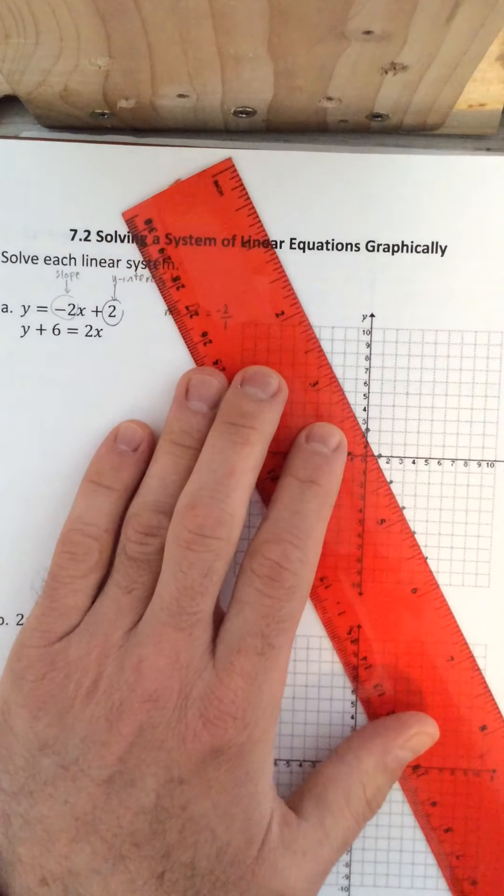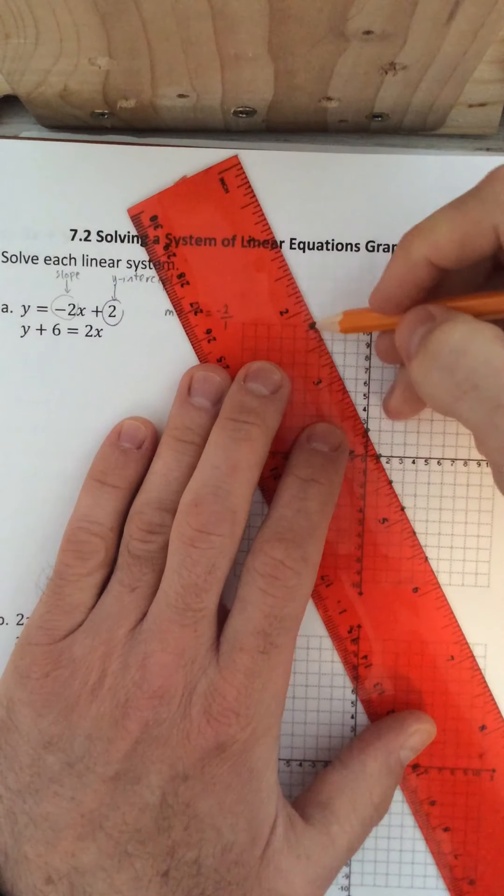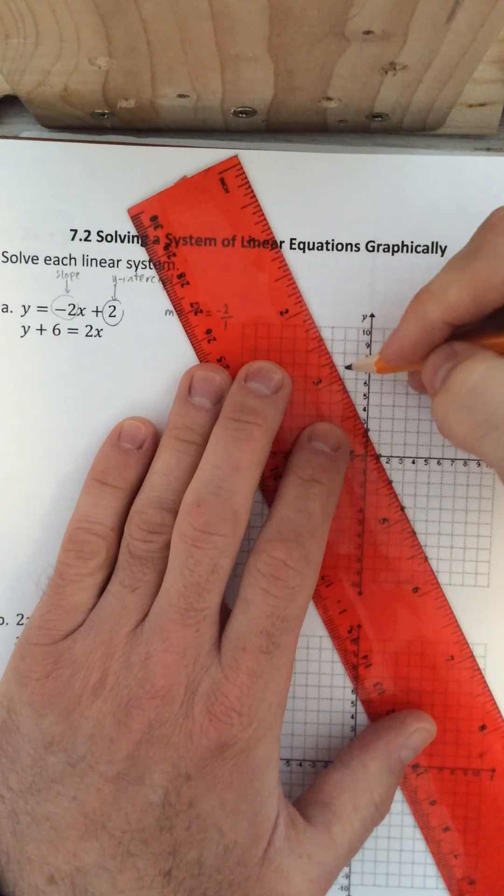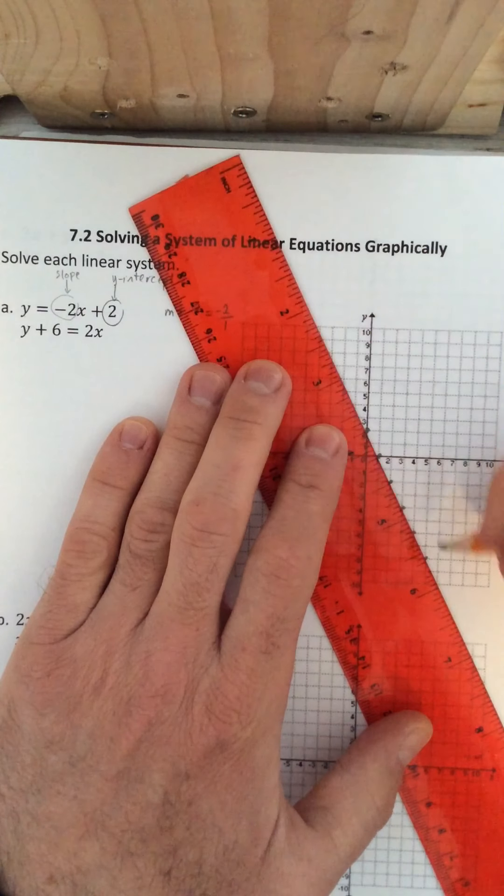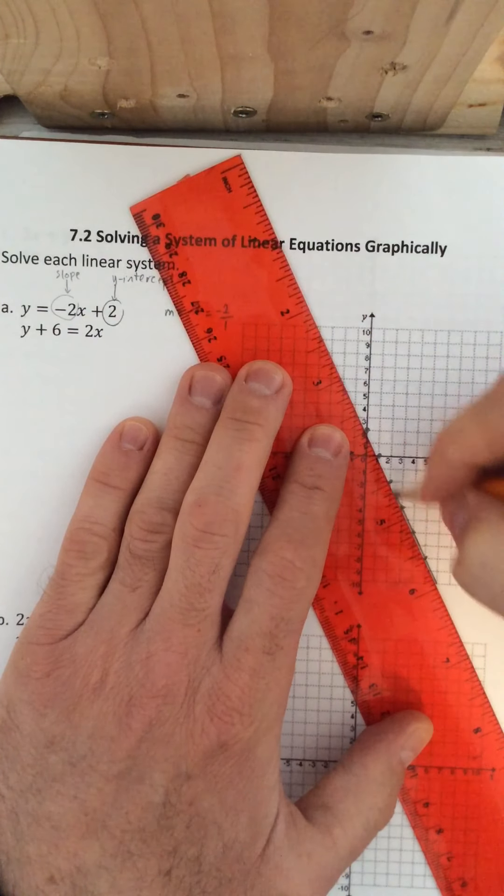And we do need to draw a line through the points and you should go from one end of the graph to the other. So it should look something like this for this first line.